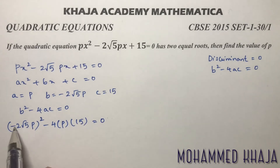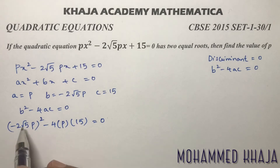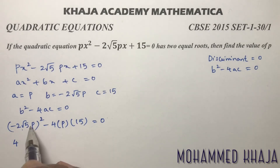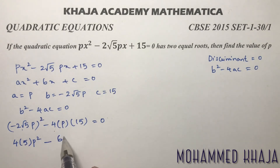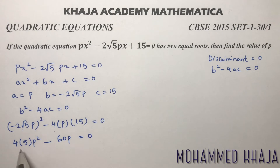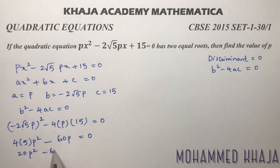The minus sign squared becomes plus, 2² is 4, √5 whole squared is 5, and p squared. Then 4 times 15 is 60p equals 0. So 4 times 5 gives 20p² minus 60p equals 0.